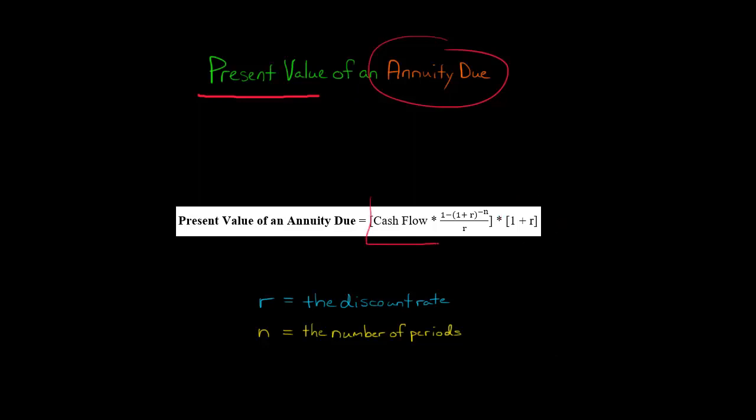If you take this component, you'll notice that's the formula for the present value of an ordinary annuity. So for the present value of an annuity due, the only difference is we multiply by 1 plus r. We just take the present value of an ordinary annuity and multiply by 1 plus r.